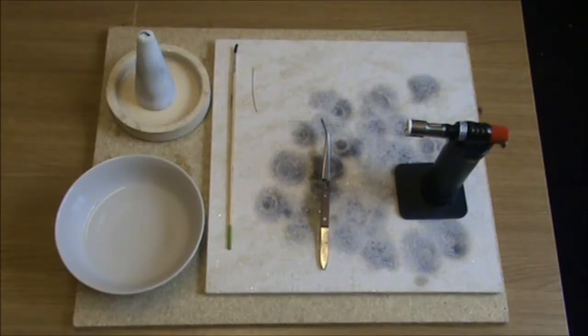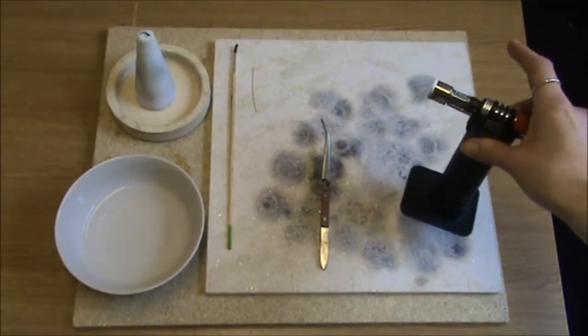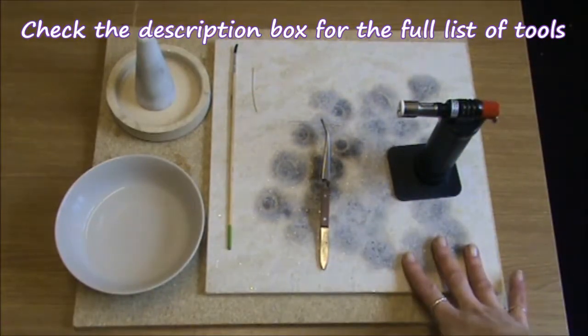All you're going to need is a small micro torch - this one runs on butane fuel. You're going to need a heat proof surface,